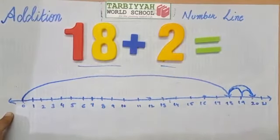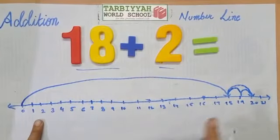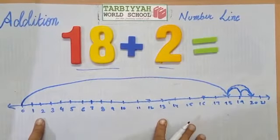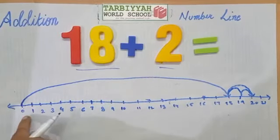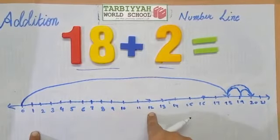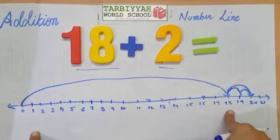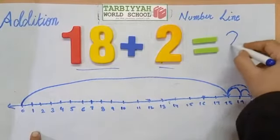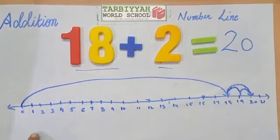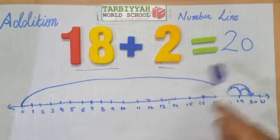So, if we add 2 numbers, we have to move the counting forward: 1, 2, 3, 4, 5, 6, 7, 8, 9, 10, 11, 12, 13, 14, 15, 16, 17, 18, 19, 20. So we get 20. 18 plus 2 is equal to 20.